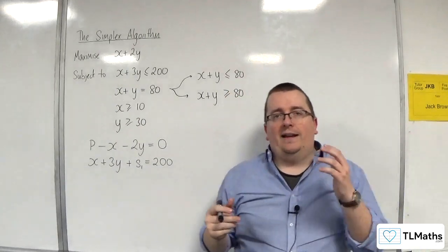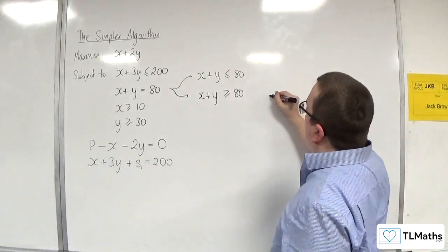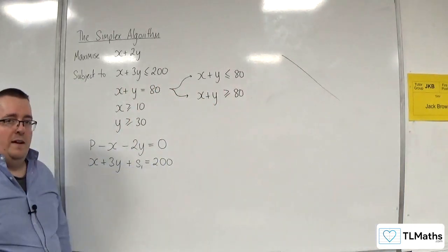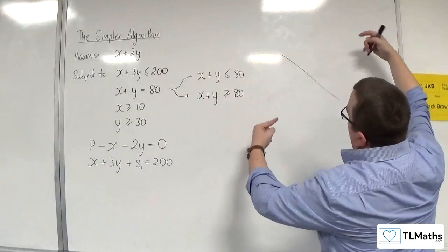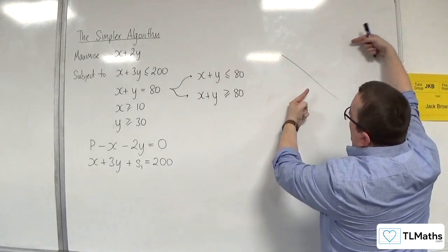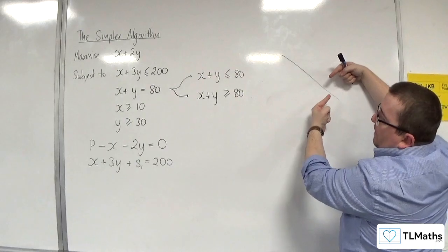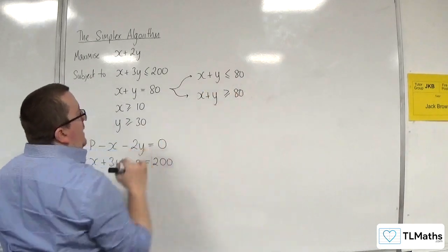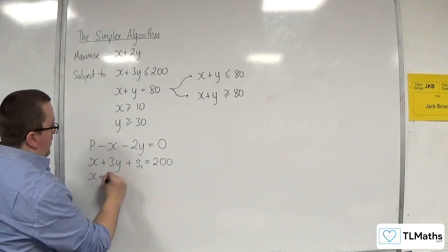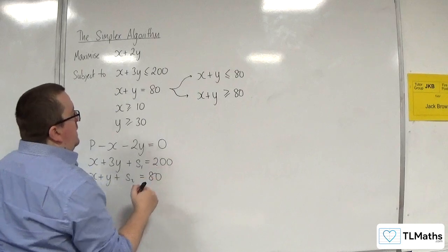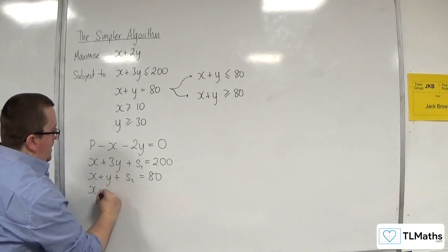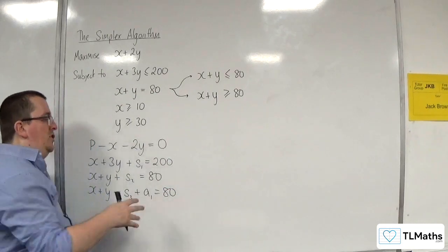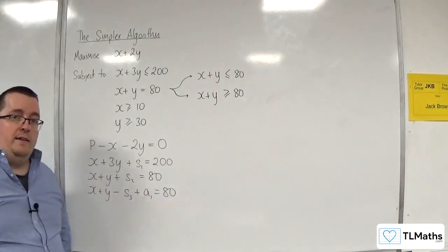So essentially you're tackling it from both sides — you've got the line x plus y equals 80, and you're trying to come at it from both directions, from underneath and above, to make sure that you land on that line. So x plus y plus a slack variable equals 80, and then you've got x plus y, take away a surplus variable, plus an artificial variable, equals 80. You need two equations here to deal with that equality.